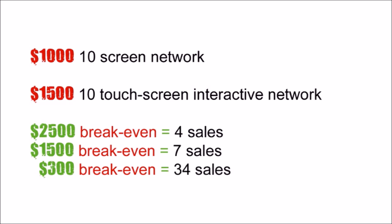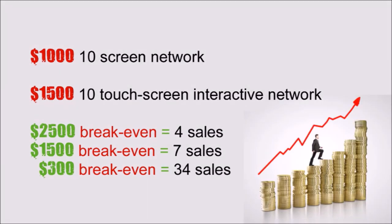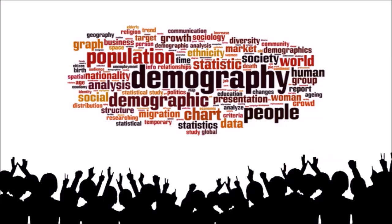If you charge $300 per location, you would break even after 34 sales. Bear in mind, the lower you charge, the quicker you sell. You can offer both pricing options. Remember, all prices are not written in stone and vary greatly depending on your location's demography. Be sure to use the CPM rule for guidance. CPM stands for Cost Per Thousand and helps calculate your advertising rates.